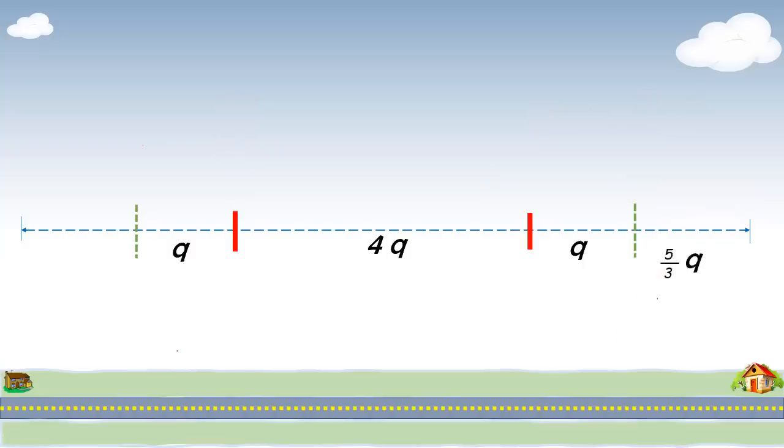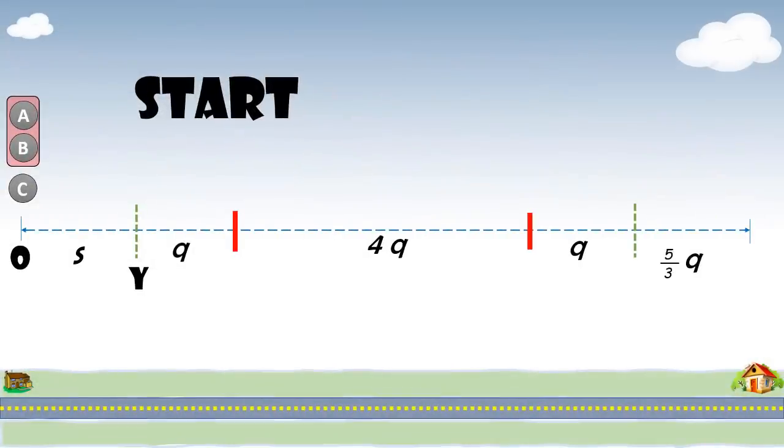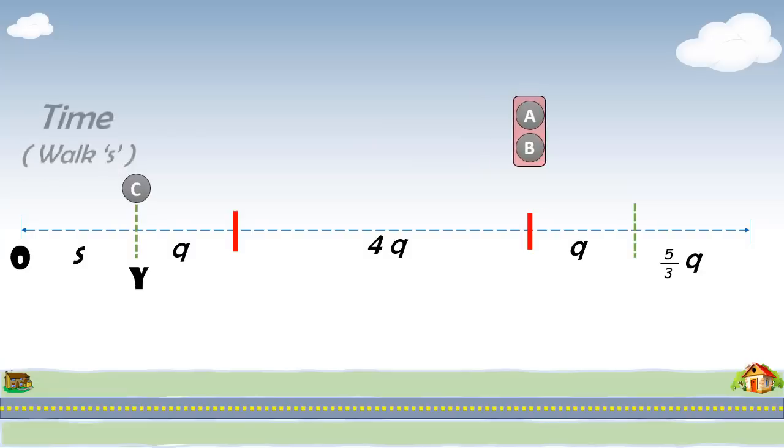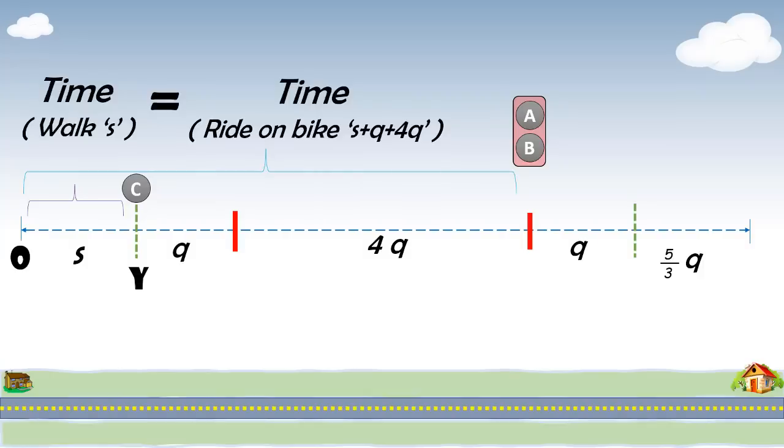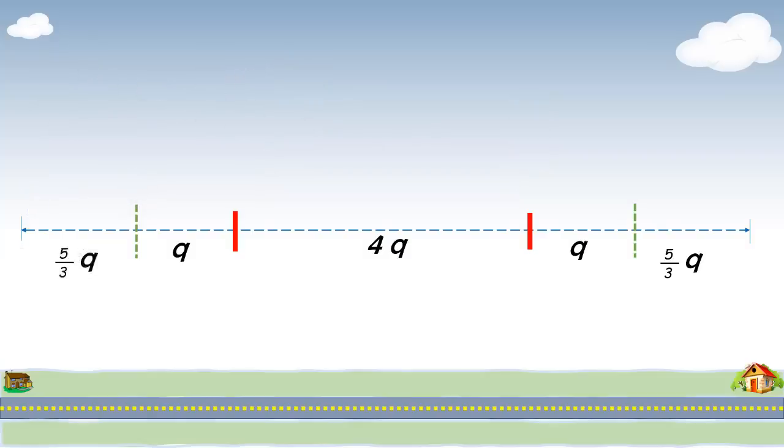The only missing distance is from origin to point Y. Let's denote it with S. Let's quickly calculate it. Let's go back to the start of their journey. The time Karl takes to walk a distance S is exactly equal to the time Alex and Bob take to ride a distance S plus Q plus 4Q on the bike. Time is distance divided by speed and we get the final variable S equal to 5Q by 3. Let's place this value on the main line.